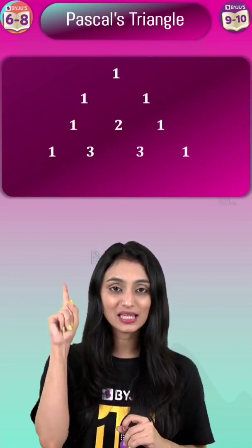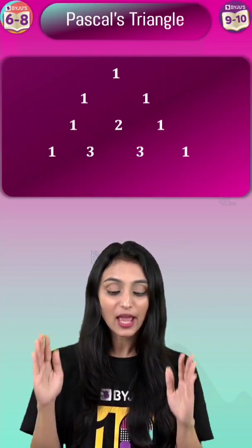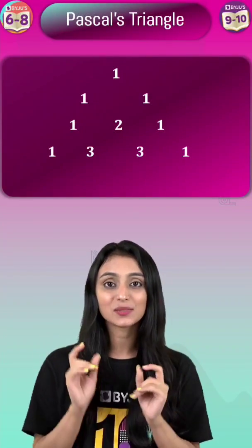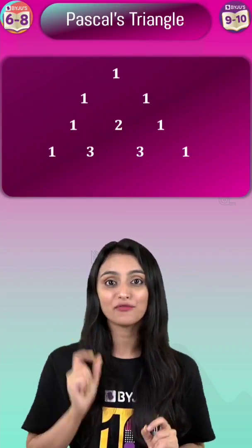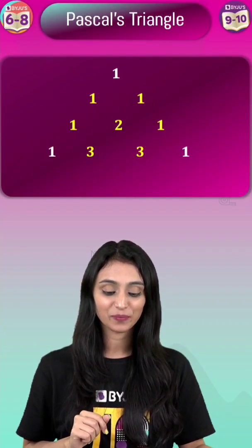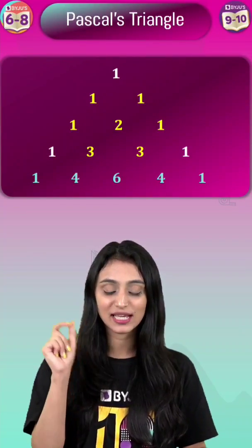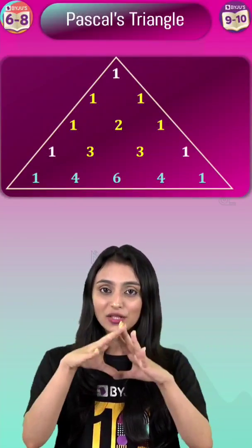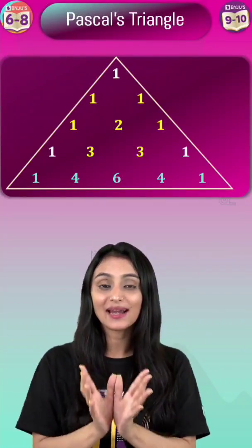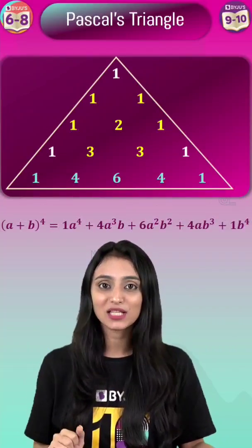Here you can see 1 is at the top and every time 1 is at the corners. In each step, we get the numbers by adding the above two numbers. Look at these numbers — at the end we have 1, 4, 6, 4, 1, and the numbers are arranged so that they reflect as a triangle.